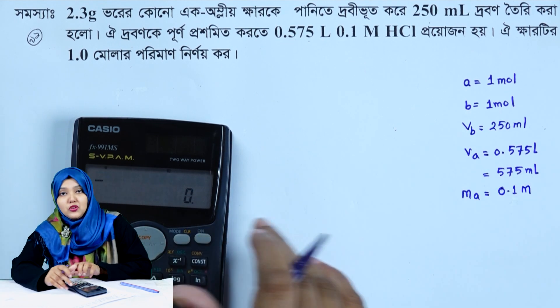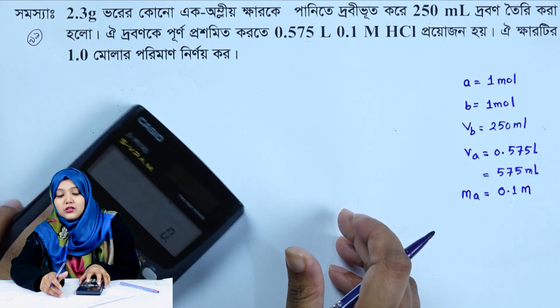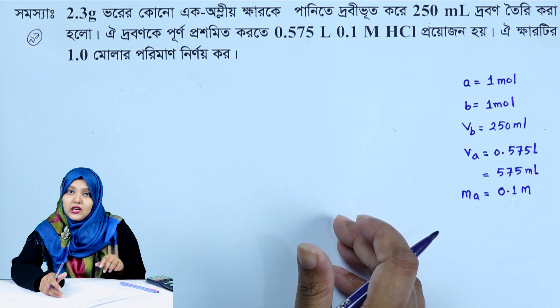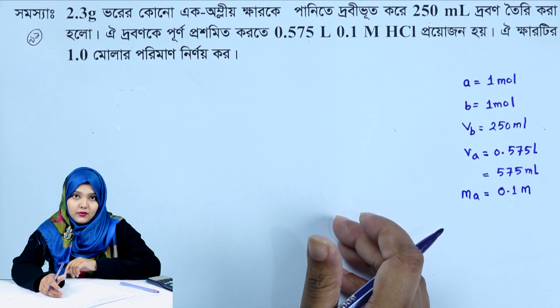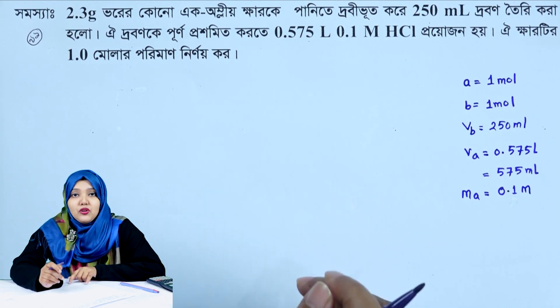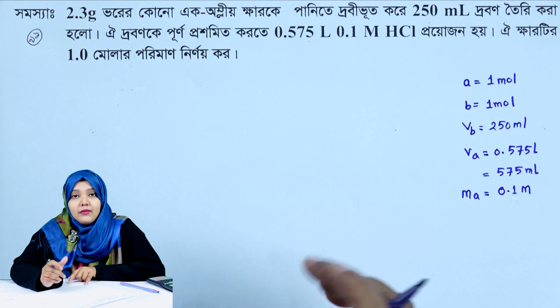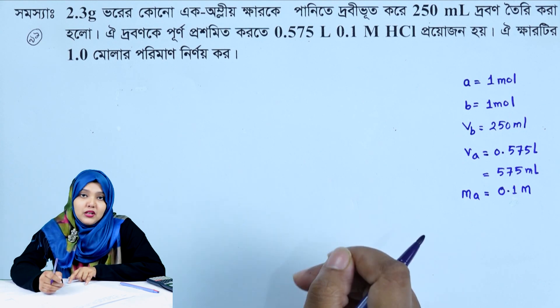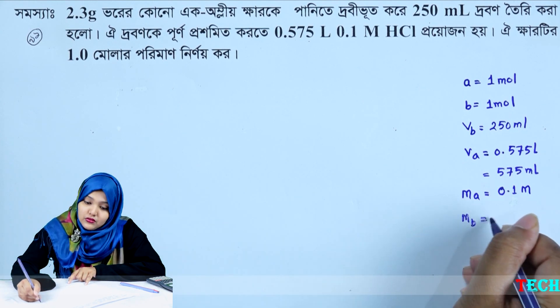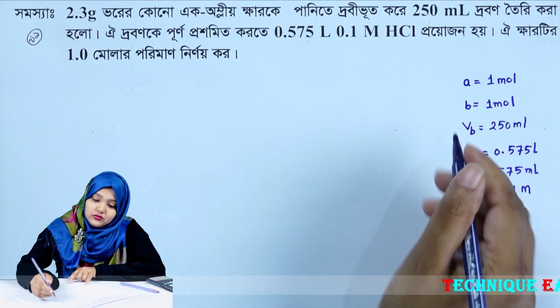Acid is equal to 0.1 molar. We will convert this molar to the molar. Then MB is equal to 3.